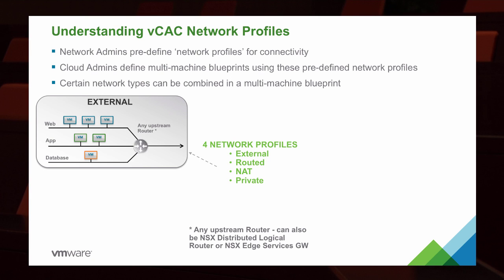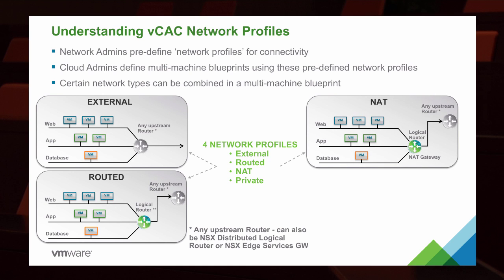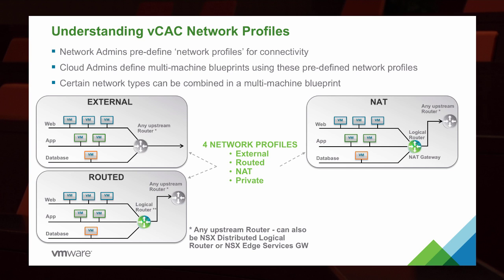External would go out to any specific upstream router with just external traffic focus. Routed will ensure that we have a logical router in place and that we're able to communicate with any upstream router outside of our network. Network address translation is going to ensure that the addresses are being translated through the logical router using a NAT gateway so that we have predictable behavior for all of the network addresses. And then private would be like an isolated or stub network where we can secure individual workloads from anything else.